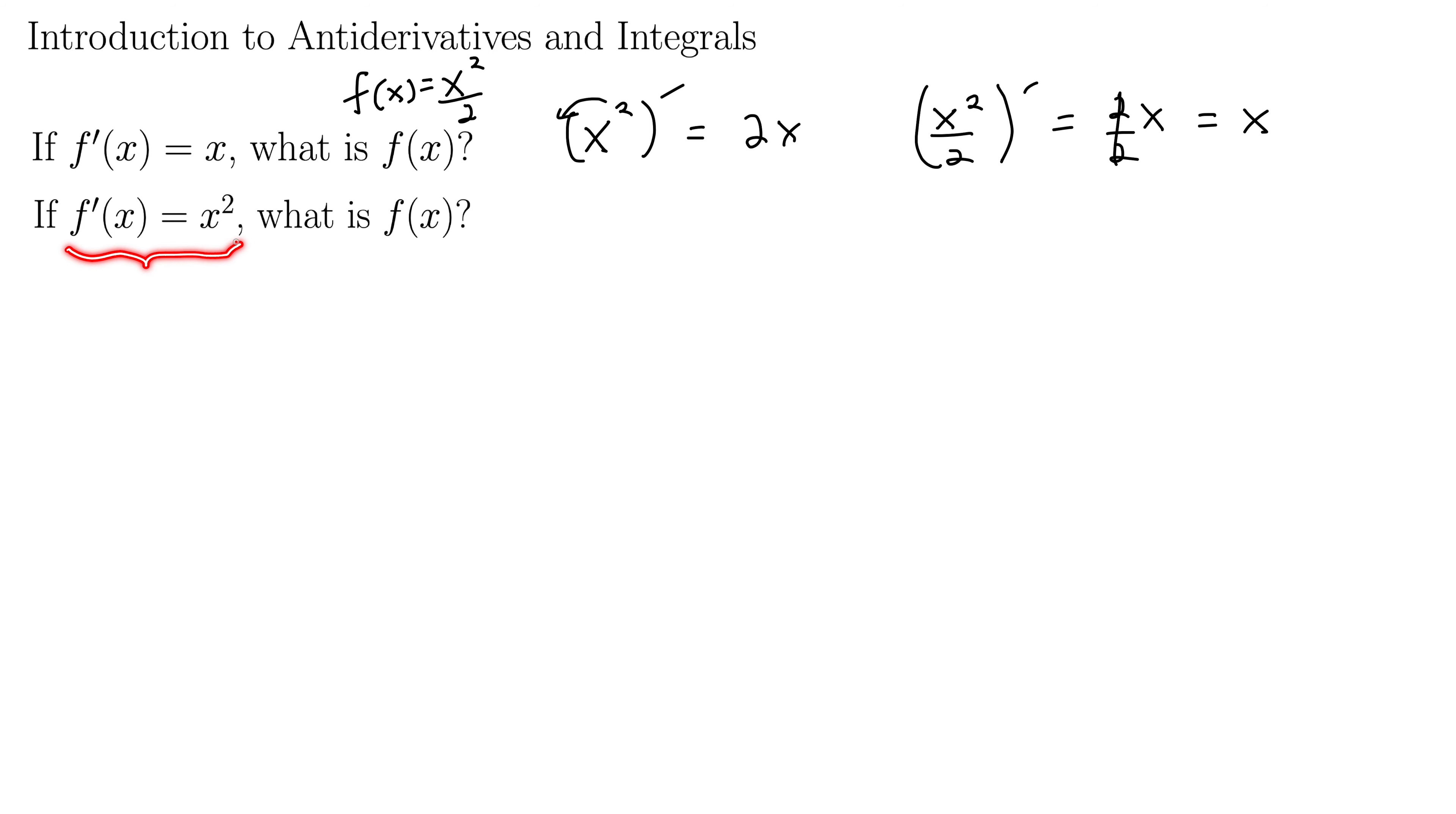Similarly, what if our derivative was x squared? What would the original function have been? So we're looking at some function such that when we take the derivative of it, we get x squared. Well, I'm thinking it must be something like x cubed, because then we use the power rule when we take the derivative and we get x squared. But when we use the power rule, that 3 will come down. So let's put a divide by 3 to cancel it out. Now we should all agree that the derivative of x cubed over 3 is indeed x squared.